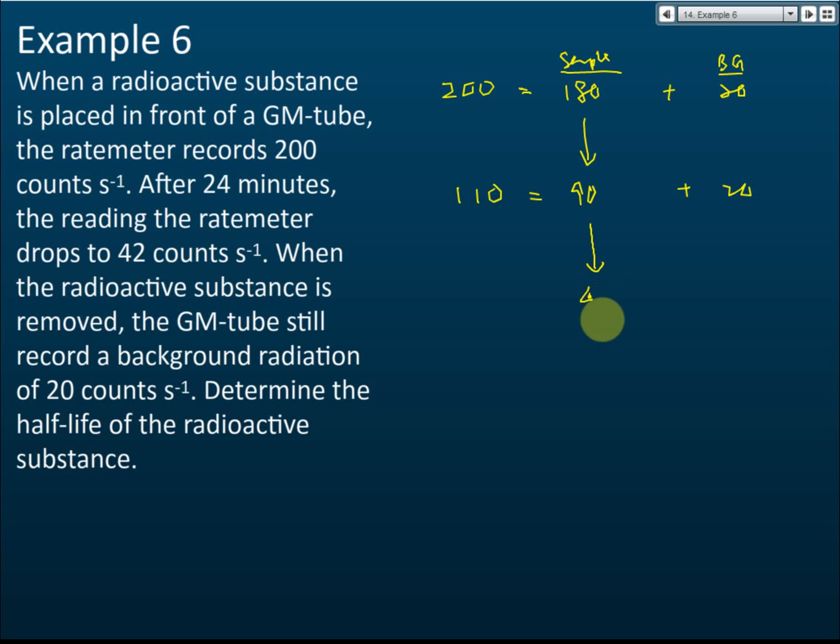After one half-life it becomes 90, another half-life it becomes 45, and plus the background we still have 65—not yet the answer because it says it reduced to 42. Another half-life it reduced to about 22, plus the background 20, now we have 42. It takes 3 half-lives to reduce from 200 to 42.